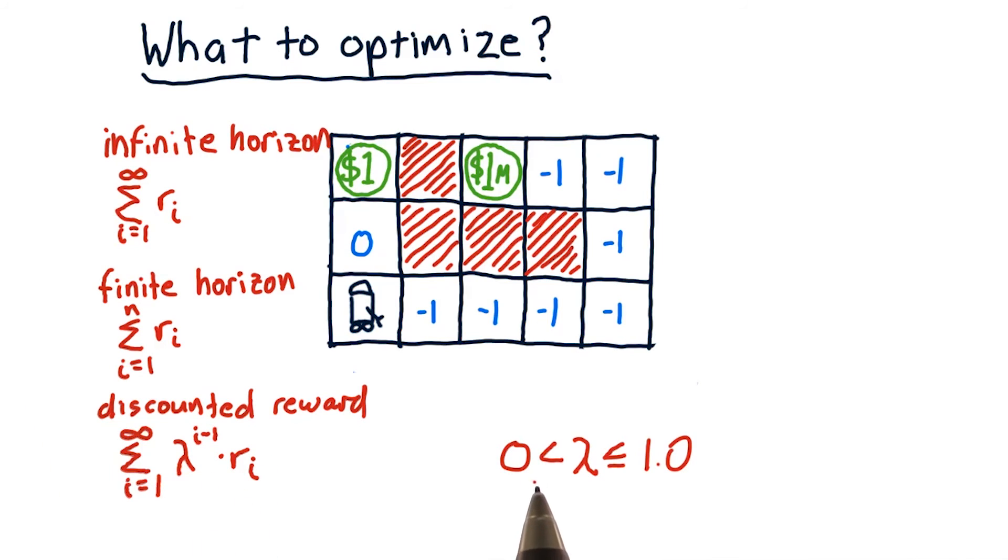Gamma is a value between zero and one. The closer it is to one, the more we value rewards in the future. The closer it is to zero, the less we value rewards in the future. In fact, if gamma is set equal to one, this is exactly the same as the infinite horizon. But gamma relates very strongly to interest rates, if you recall.